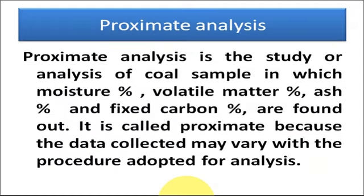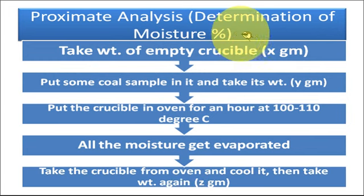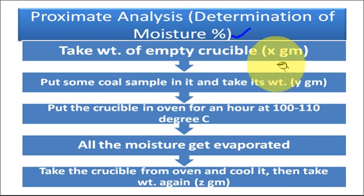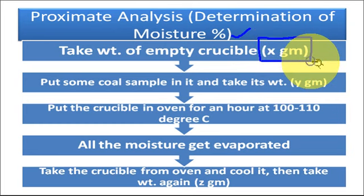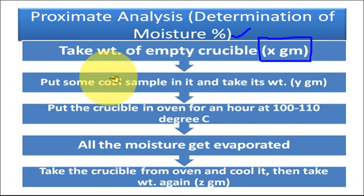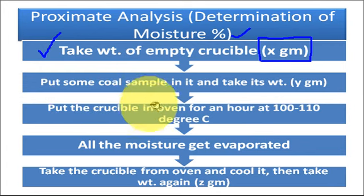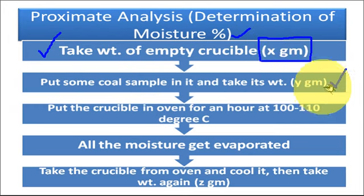Let us start with the proximate analysis. First is the percentage of moisture content in the coal sample. For the determination of moisture contents, a known weight of coal sample is taken in an empty crucible. Suppose the weight of the empty crucible is x grams. A known amount of coal sample is placed in this crucible and weighed — suppose it is y grams. The difference between x and y will be the amount of coal in the crucible.